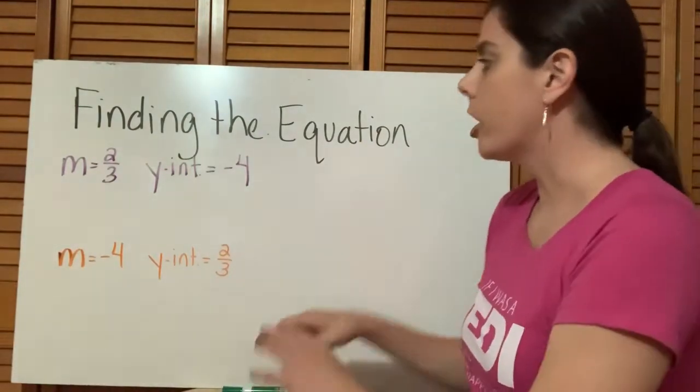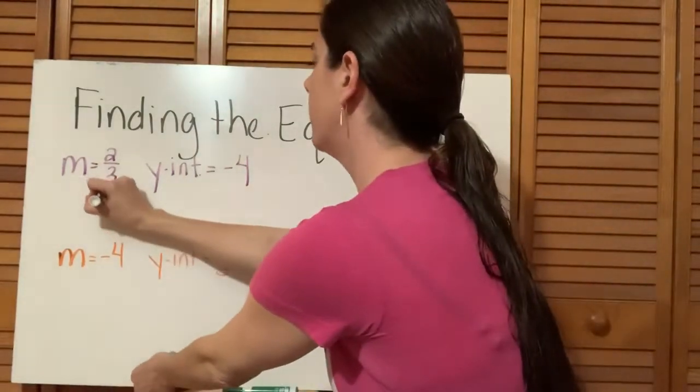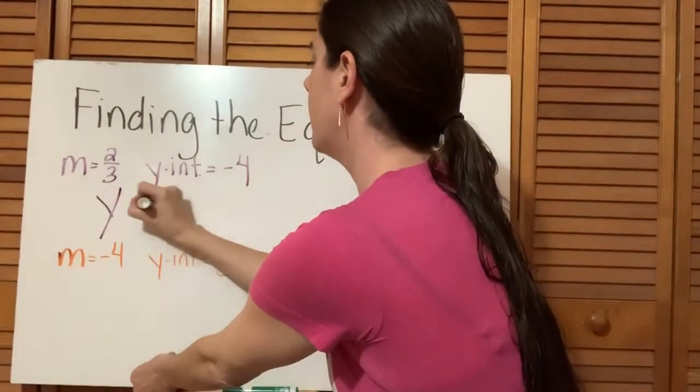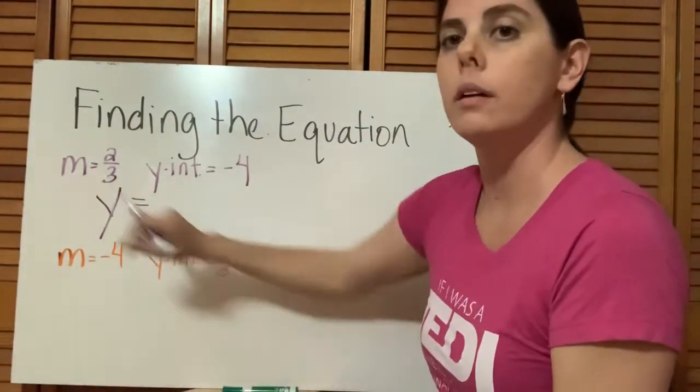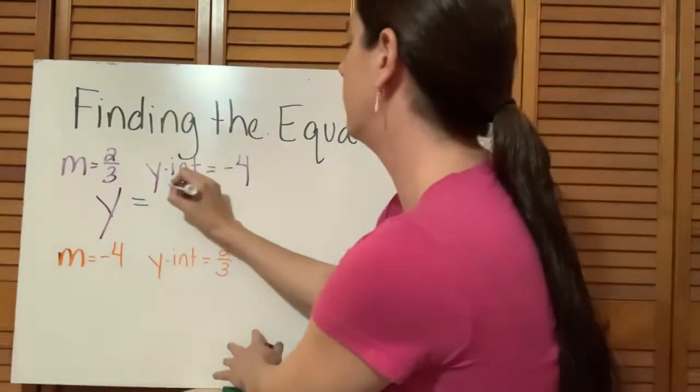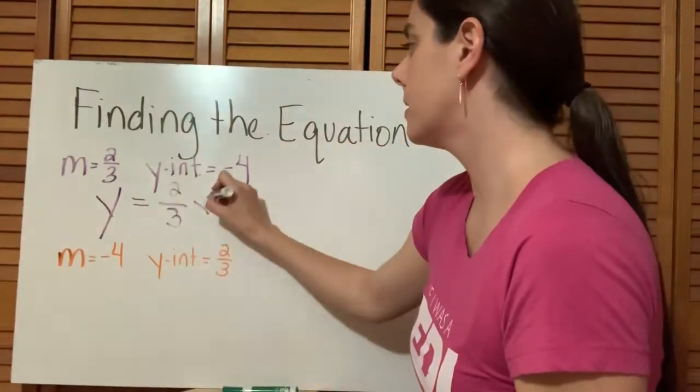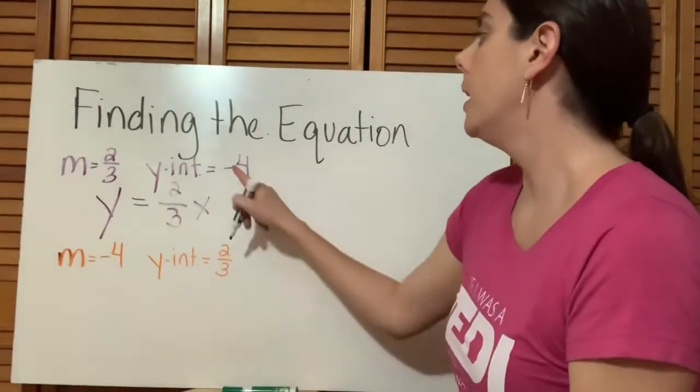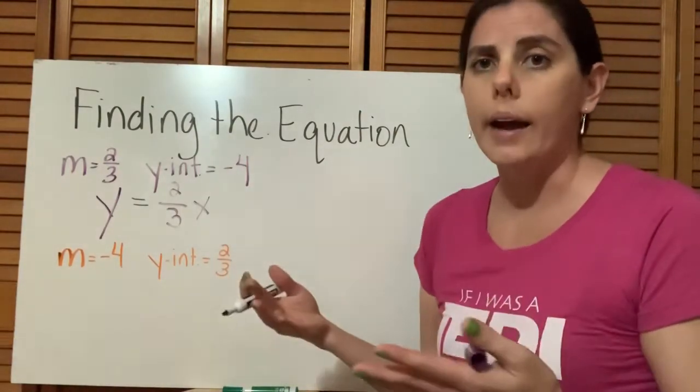So looking at our purple equation, we know that y is going to be by itself. So y equals mx. So what's our m? Two thirds. And then we have an x. So mx. And then plus b. So remember, b represents our y-intercept.